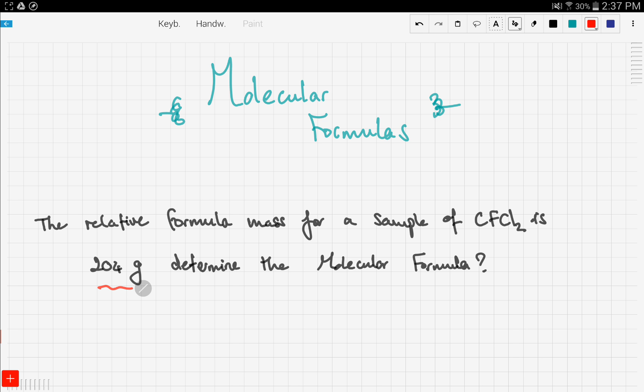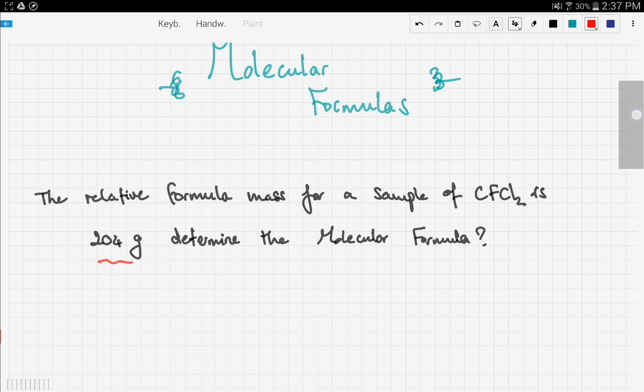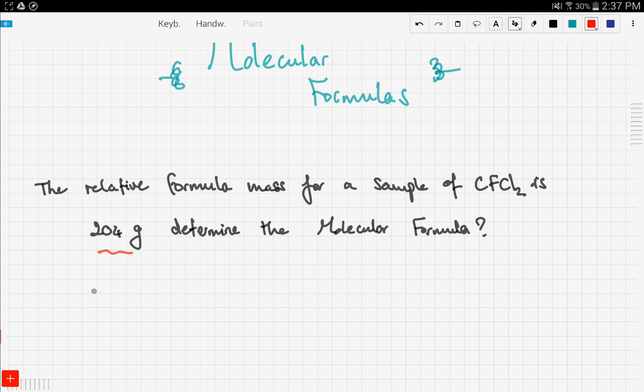So the first thing you need to do is find the molar mass of CFCl2. You go to your periodic table and you find the relative atomic masses of each element and you add these up.